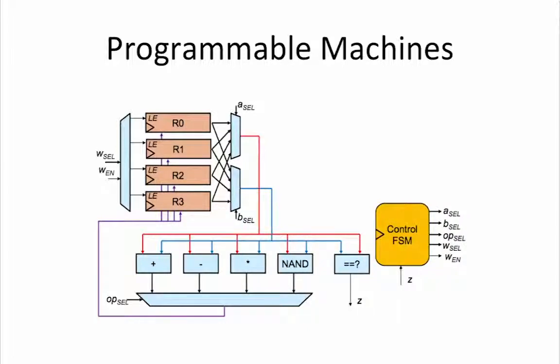The next control signal is OPsel. It selects which of the four operation outputs should be selected by the OPsel multiplexer as the result of our operation. This result is fed back to the register file along the purple wire. The WN is a write enable for the register file which specifies whether or not the result of our operation should be written back into the register file.